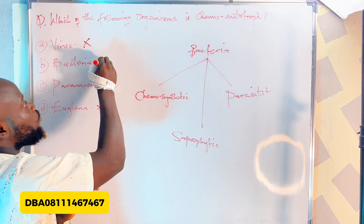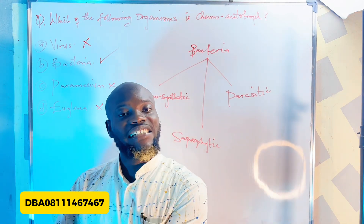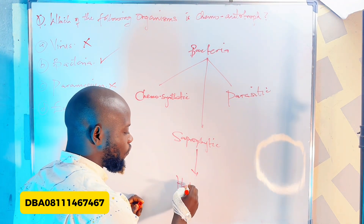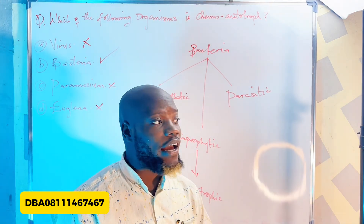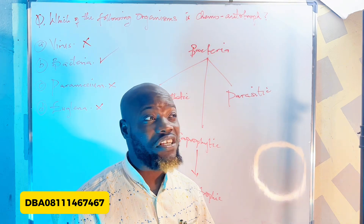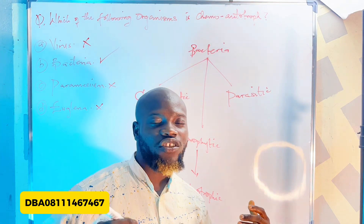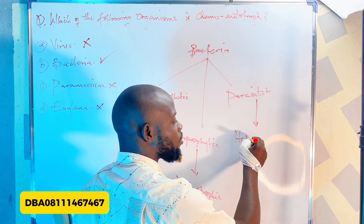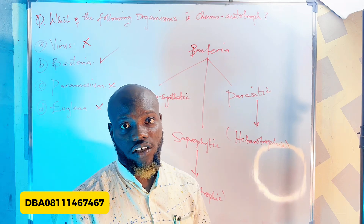Some bacteria are saprophytic — they feed on dead decaying matter — and they are heterotrophic, not autotrophic. Some bacteria are parasitic, like those that cause typhoid and gonorrhea. They live inside a host and feed on nutrients the host is supposed to use, making them parasitic. Since they cannot manufacture their own food, parasitic bacteria are also heterotrophic.